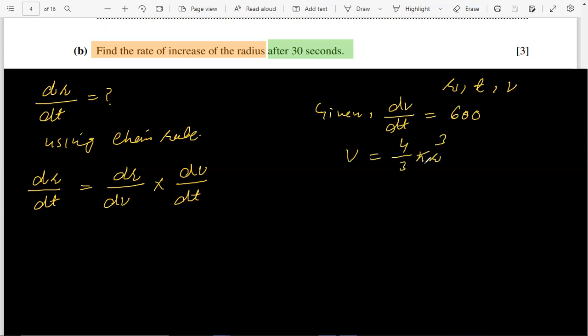By differentiating volume with respect to r, dV/dr equals 4/3 π into 3 r². Because we have value of radius in part A, radius is 16.3 squared.